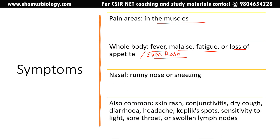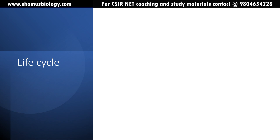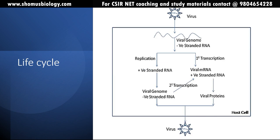Other symptoms include runny nose, sneezing, conjunctivitis, dry cough, diarrhea, headache, Koplik's spots on the body, sensitivity to light, sore throat, and swollen lymph nodes. While many of these features overlap with other illnesses, the characteristic skin rash is unique to measles. Unlike rubella virus which produces blister-like structures, measles produces red-colored rashes — not blisters.